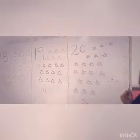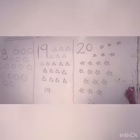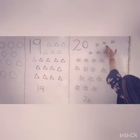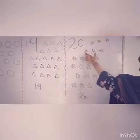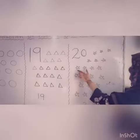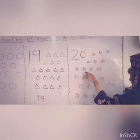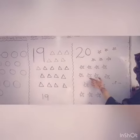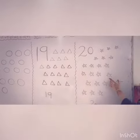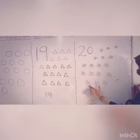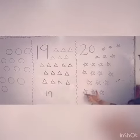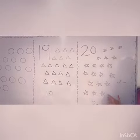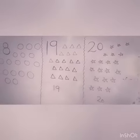Now, count the stars. How many stars are there? Count it. 1, 2, 3, 4, 5, 6, 7, 8, 9, 10, 11, 12, 13, 14, 15, 16, 17, 18, 19, 20. There are 20 stars.